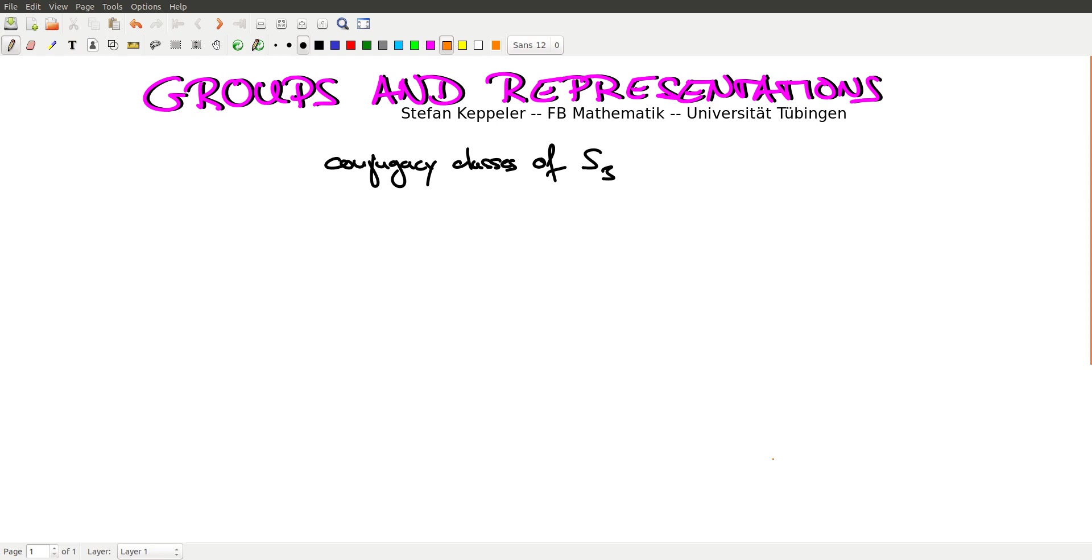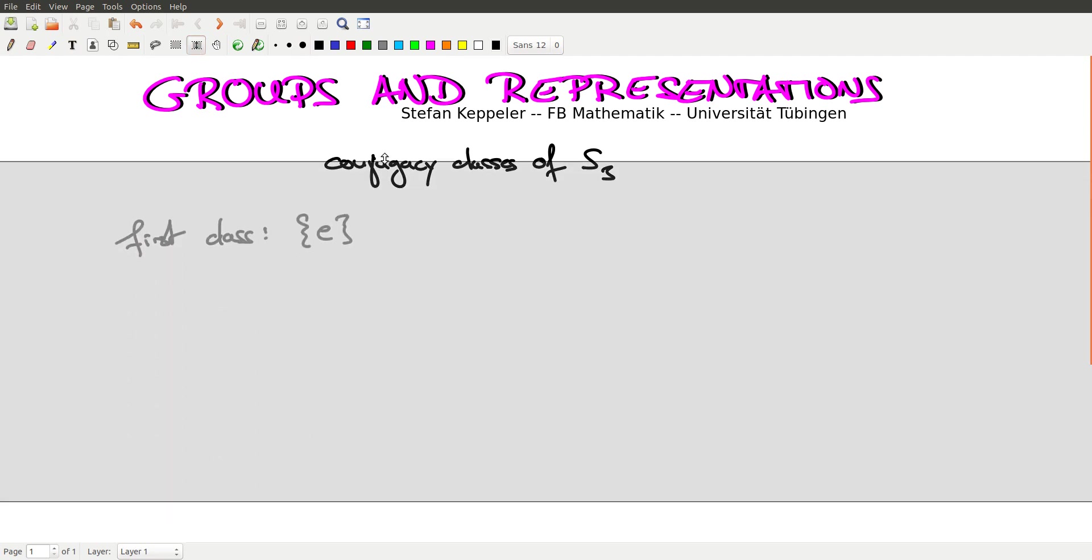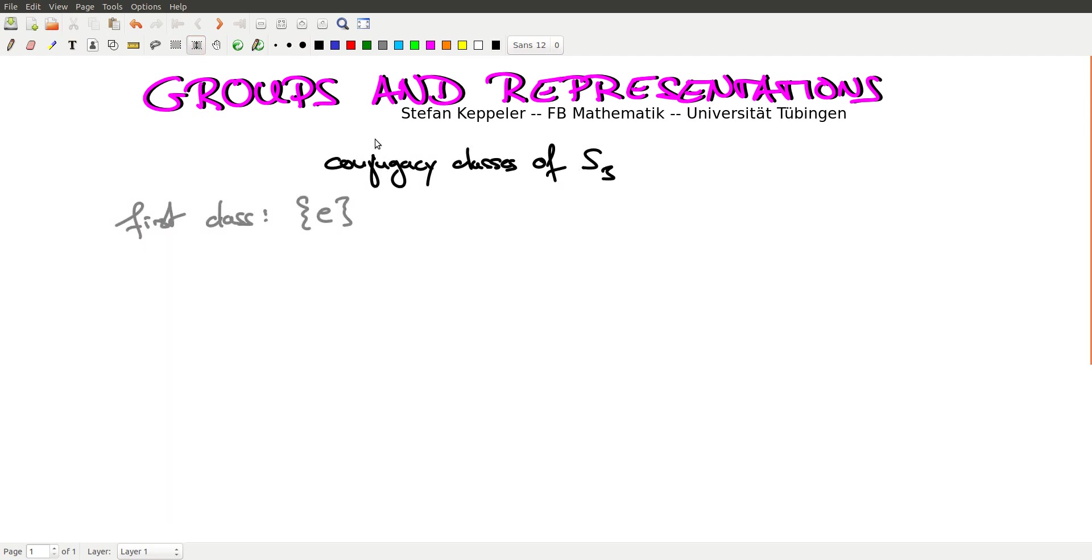Let's determine the conjugacy classes of S3. We know that the identity is always a conjugacy class of its own. So that's the first class we just found.